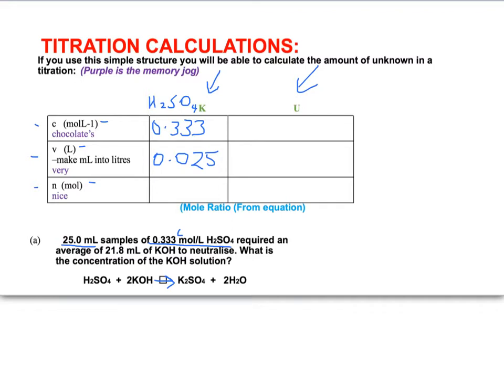And it says that it requires an average of 21.8 mL of potassium hydroxide to neutralize it. So what is the concentration of the KOH? So that means that we don't know this concentration, so that must be our unknown. So we'll label this column with the unknown. This is what we're trying to find out.